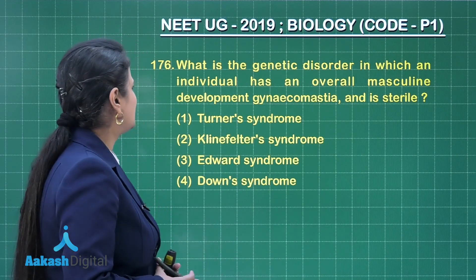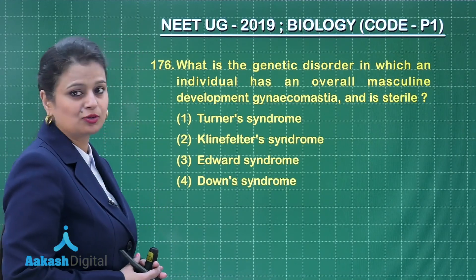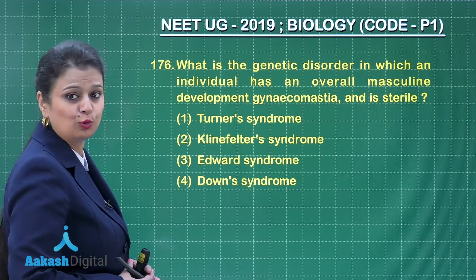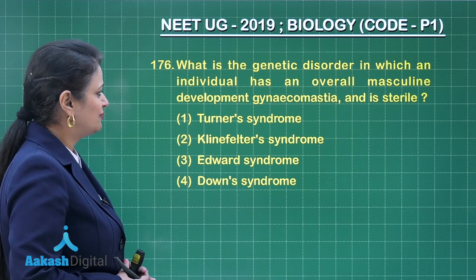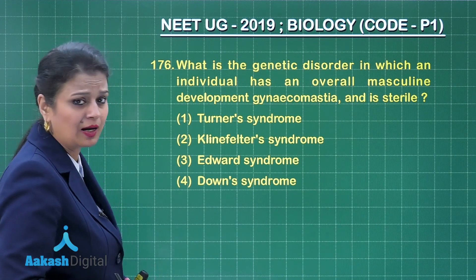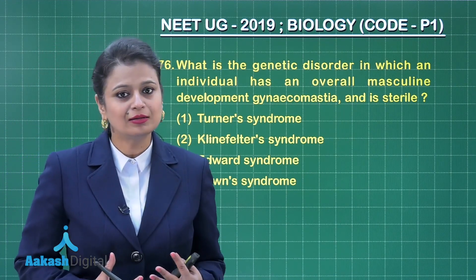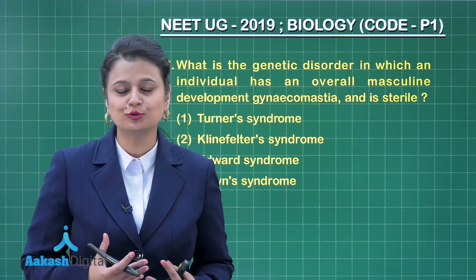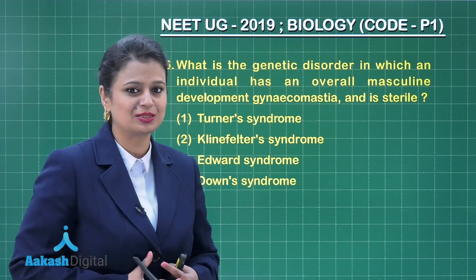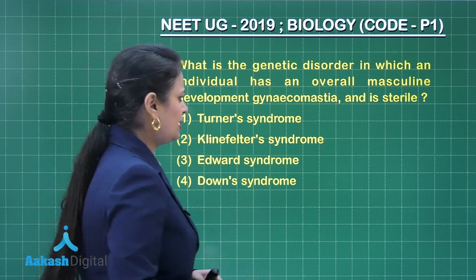Question number 176. What is the genetic disorder in which an individual has an overall masculine development, gynecomastia, and is sterile? These features are associated with trisomy of sex chromosomes, and this syndrome is known as Klinefelter syndrome.